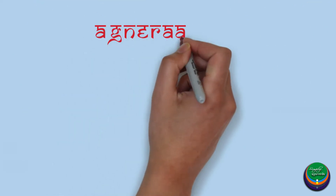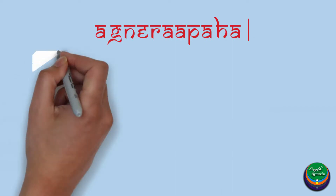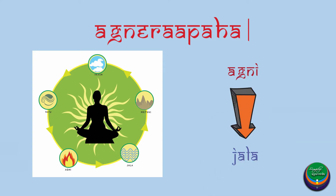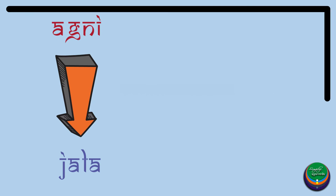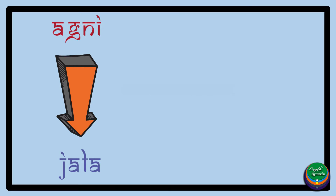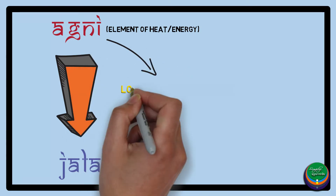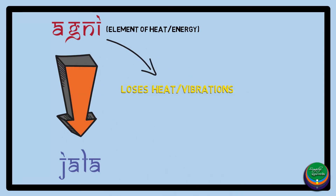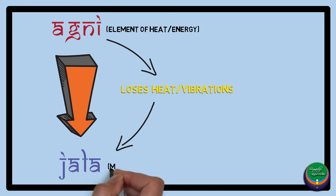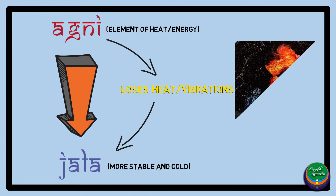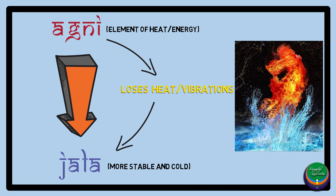Agne Rāpaha. As we learnt in the previous videos, the Mahabhutas sequentially create the next Mahabhutas. Hence Jala is formed from Agni Mahabhuta. Agni, which is the entity of heat and energy, starts losing its innate energy or vibrations, thus forming an entity which is more stable and cold. This entity is Jala Mahabhuta.